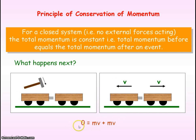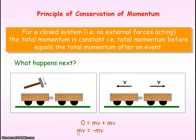Our initial momentum is zero, and this is the momentum for the two trolleys after the collision. If we rearrange this equation, we can see that the momentum of the first trolley must be equal and opposite to the momentum of the second trolley to conserve momentum.